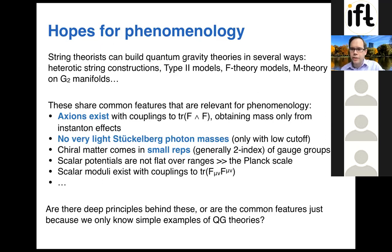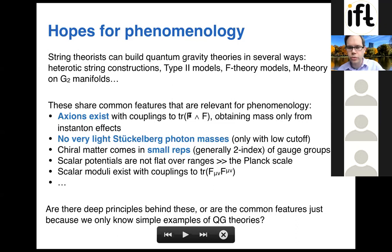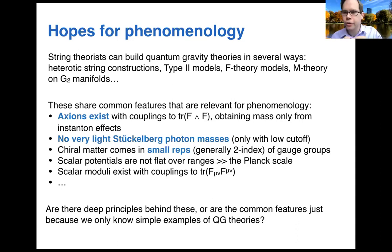I come at this from the direction of particle phenomenology. One reason I think there's potential hope for applying these things to phenomenology is that when you look at string theory constructions of quantum field theories — in different corners of the string landscape, heterotic strings, type II strings, and so on — they all seem to have some common features. One feature I'll be talking about later is that axions always exist: whenever people find a construction of a standard-model-like gauge theory within quantum gravity, there's always some light scalar field that couples to the trace of F wedge F and obtains a mass from instanton effects. You also don't find very light massive photons with small Stückelberg masses.